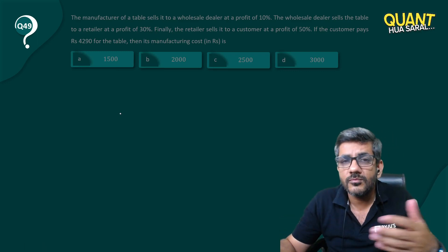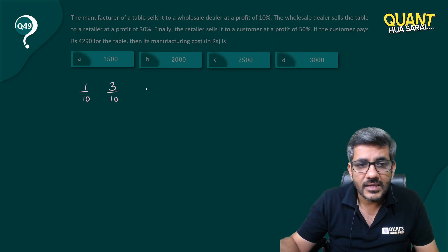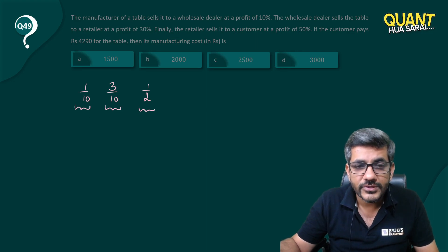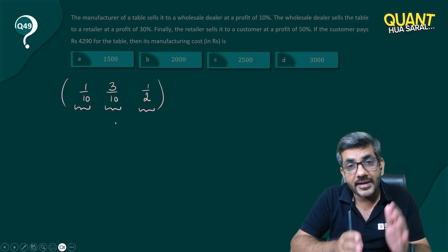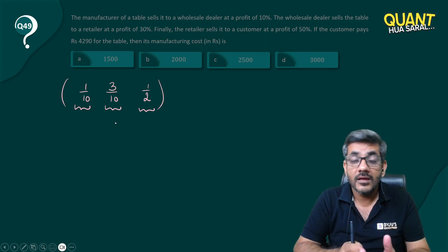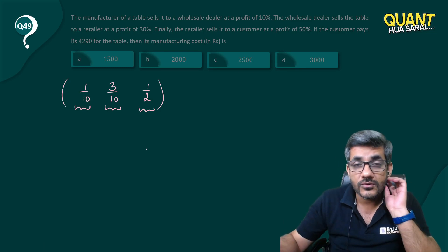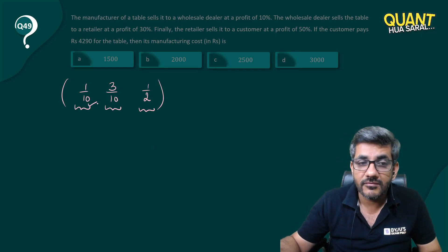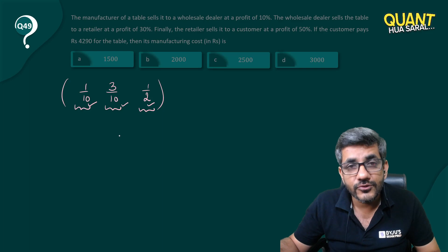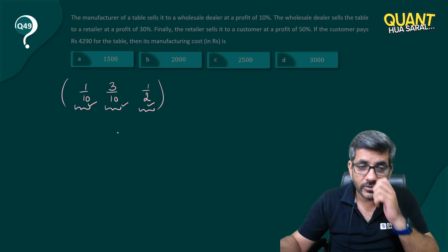To deal with these kinds of questions, we have 3/10, 1/10, and 1/2. Now, 1/10 has 10 in the denominator, 3/10 has 10 in the denominator, and 1/2 has 2 in the denominator. So the initial price should be such that when I take 1/10 of it, it is still divisible by 10, and when I take 3/10 of it, it is still divisible by 2. So I want the number to be a multiple of 10 × 10 × 2, which is 200.